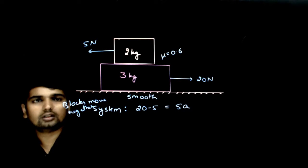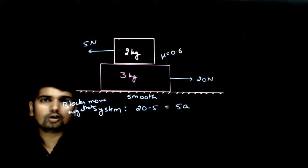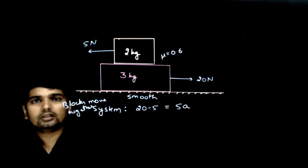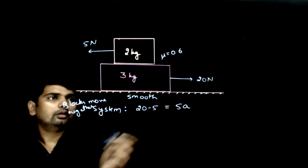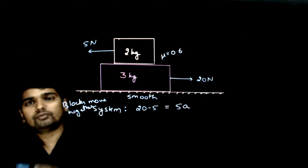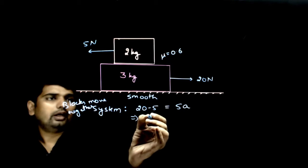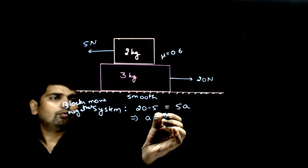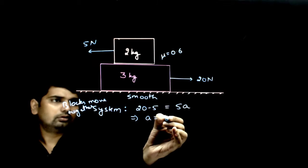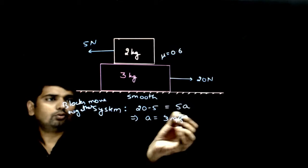I have considered the first case as the two blocks move together. If the two blocks move together and I consider them as a system, then I can say that the net external force 20 minus 5 equals mass into acceleration 5A, which implies acceleration equals 3 meters per second squared.